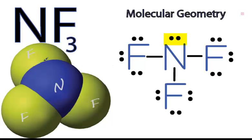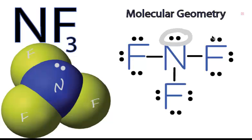The lone pair is sitting right here on top of this nitrogen, right above it. We call this a trigonal pyramidal geometry because it's kind of like a pyramid with the top of the pyramid being those two electrons. You could also use the AXN notation to determine the molecular geometry for NF3.